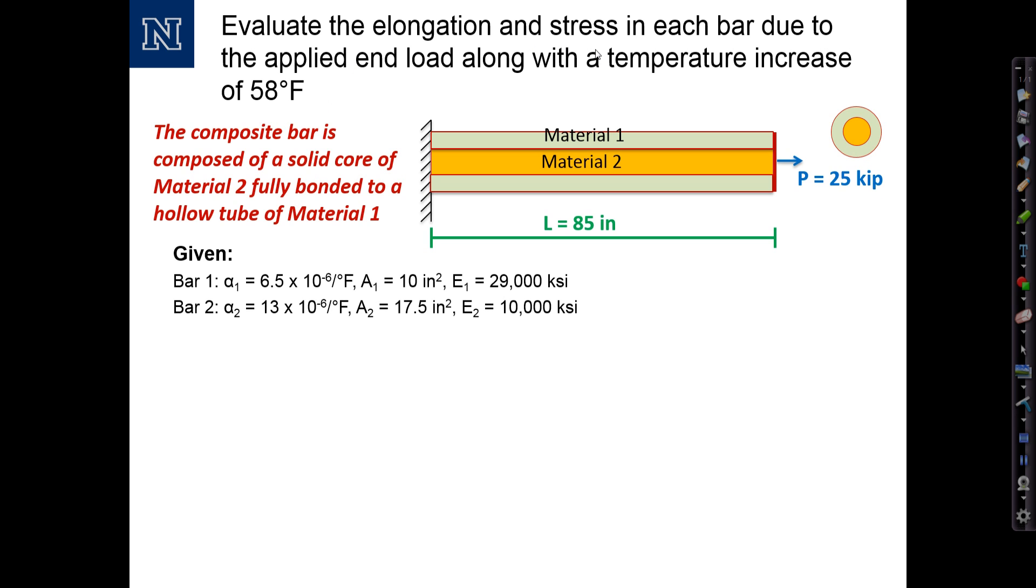And we are asked to evaluate elongation and stress in each bar due to these loading systems. So let's go ahead and summarize what we know. There already is a good summary of the given information, but we want to add to that the information about the loading, which is that we have the end load P of 25 kips, as well as a temperature increase delta T equals 58 degrees Fahrenheit, which is a type of load, a thermal load.